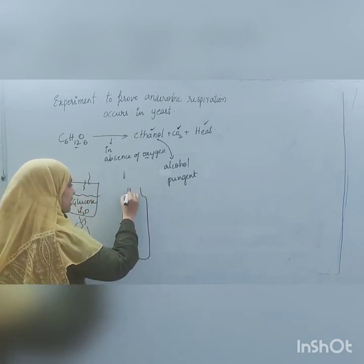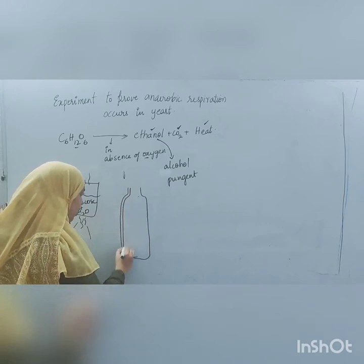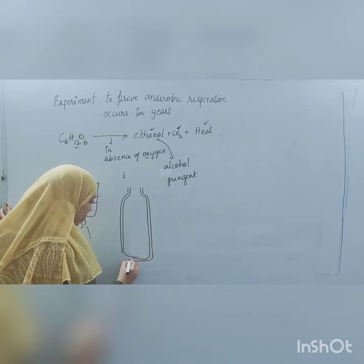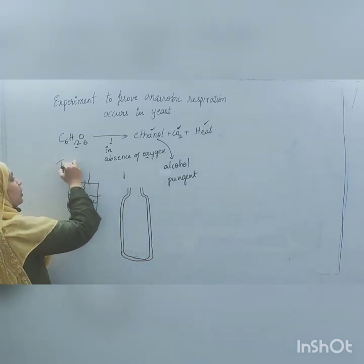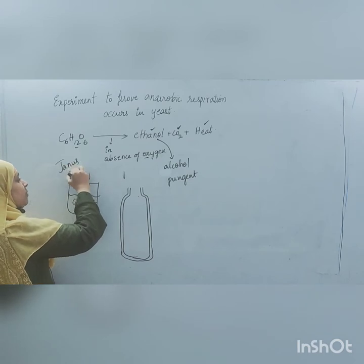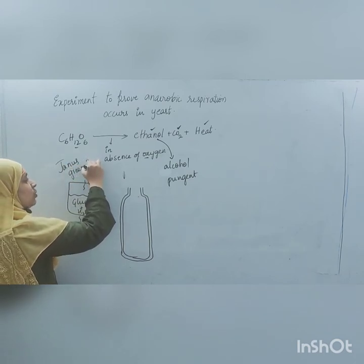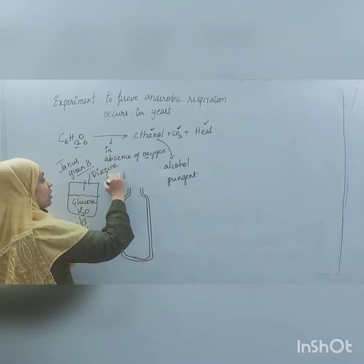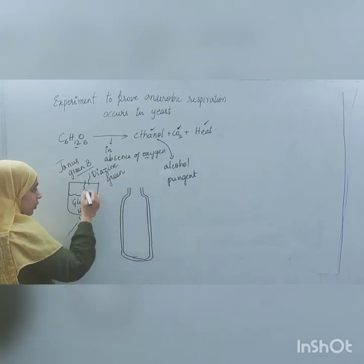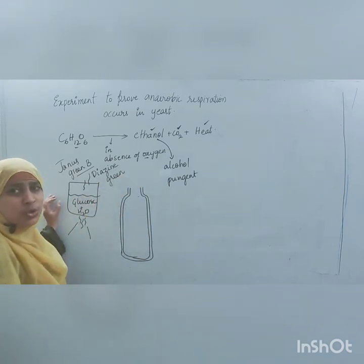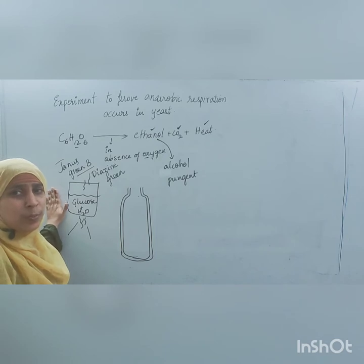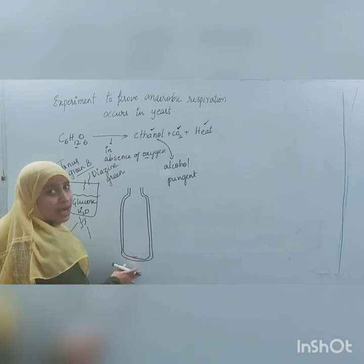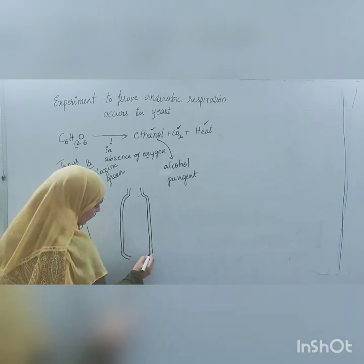To check whether oxygen has been completely removed, you can add a few drops of Janus Green B solution. Janus Green B is a bluish-green colored solution, also called diagene green. Add one or two drops to the glucose solution. If it turns pink, there is no oxygen present in the solution.